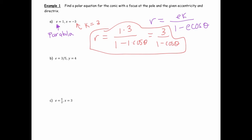One thing to keep in mind from that example is that k is always positive. So you don't want to put a negative 3 up there in the numerator. It's going to be a 3. The negative is reflected in the denominator by the sign in front of that e.